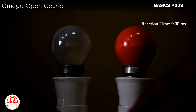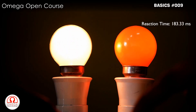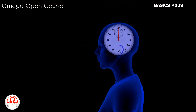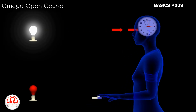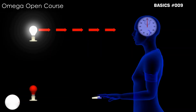Then we played the video in slow motion and measured the time from switching on of the white bulb until the red bulb was switched on. As soon as the white bulb is switched on, the person's brain receives this signal and after some processing, decides to switch on the red bulb. Then the brain sends signals to the muscles of the hand to switch the bulb on.